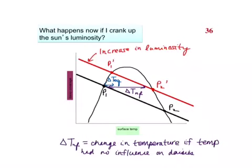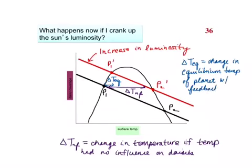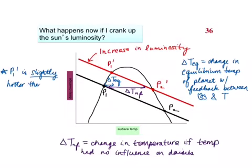So let me just go ahead for completeness and write a definition of what delta Teq is. And this is the change in equilibrium temperature of the planet with feedback between daisies and temperature. So an important note here is that P1 prime is slightly hotter, where there's an emphasis on slightly, less than P1, but less than delta Teq for the no-feedback condition.